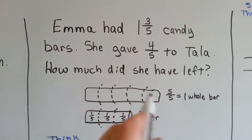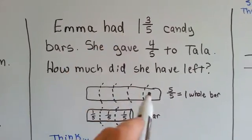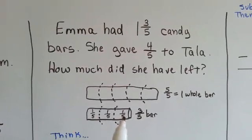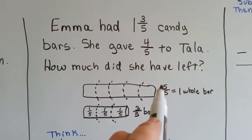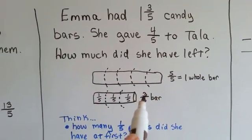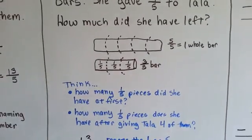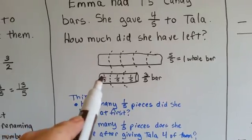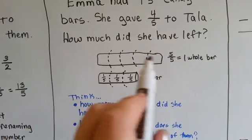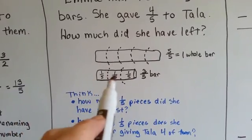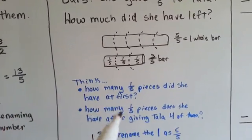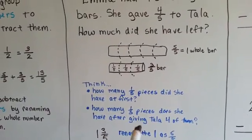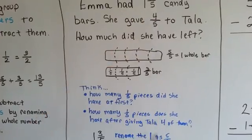Well, here's the whole one. That's the one whole one, and then she had three fifths of another one. The whole one is regrouped into five fifths, and then we have the three fifths. So, what we think is, how many one fifth pieces did Emma have in the beginning? She had these three, and if this whole one was split into five, she'd have five, six, seven, eight of them, right? Five little one-fifth pieces. And how many of the one-fifth pieces did she give to Tala? She gave four one-fifth pieces, didn't she?